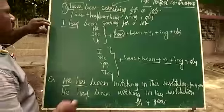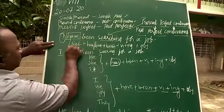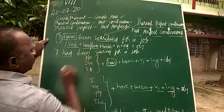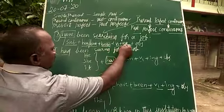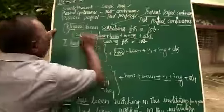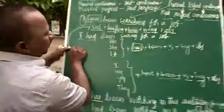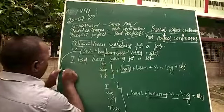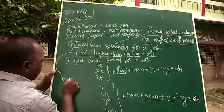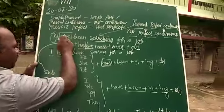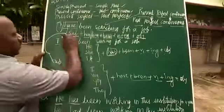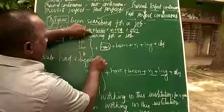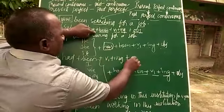Remember: if the sentence is in present perfect continuous, the formula is — subject + have/has + been + V1+ing + object. If you want to change it to past perfect continuous, we cannot take have or has — we take 'had'. The remaining stays all the same: subject + had + been + V1+ing + object.